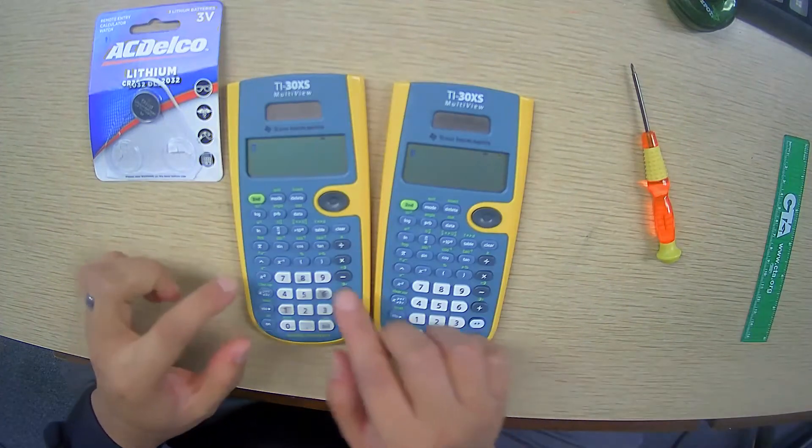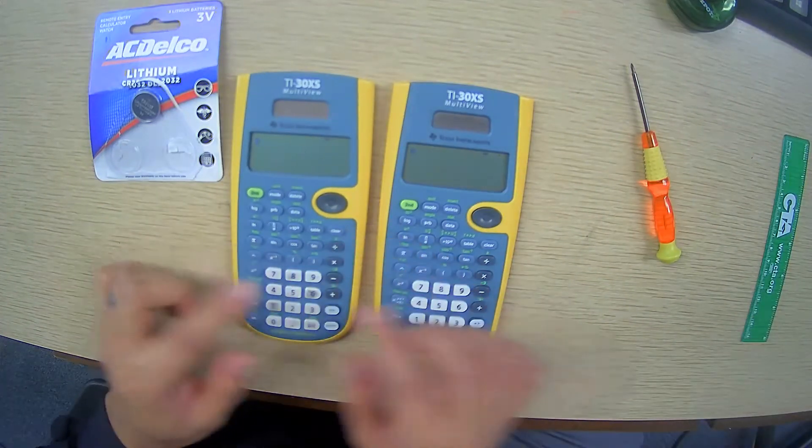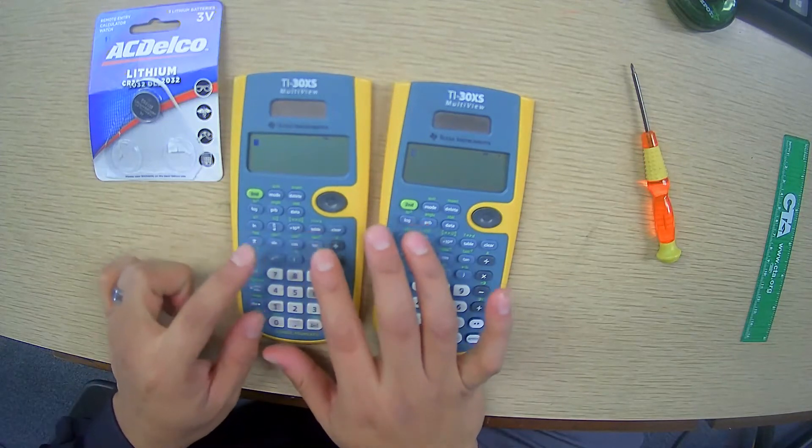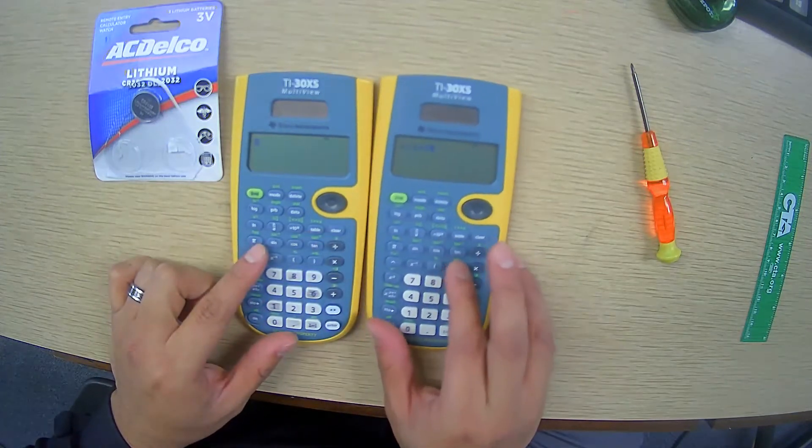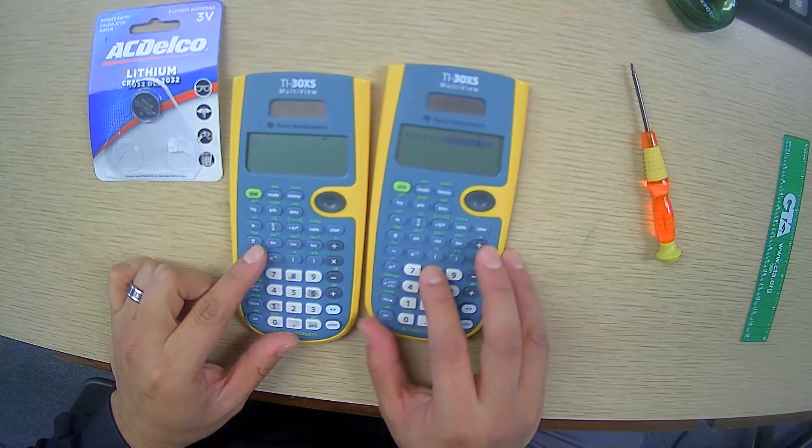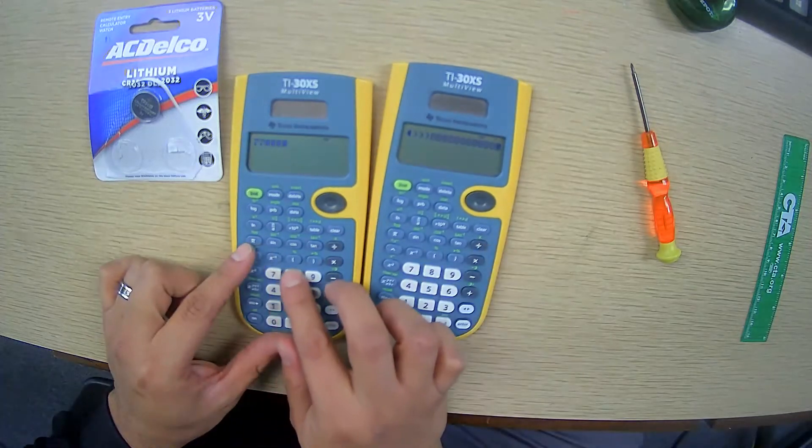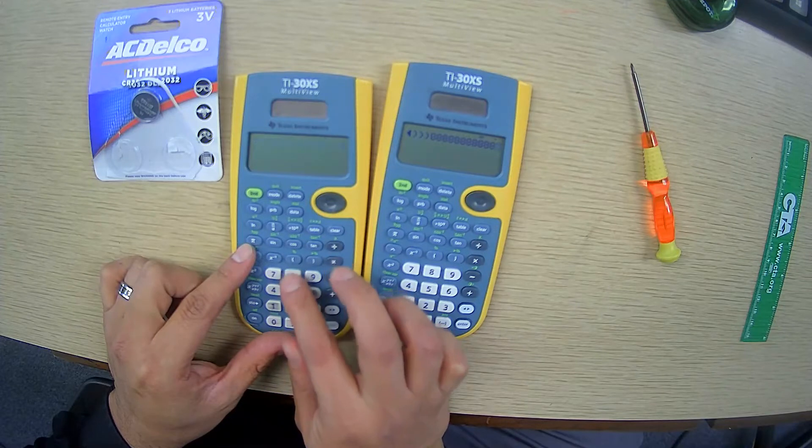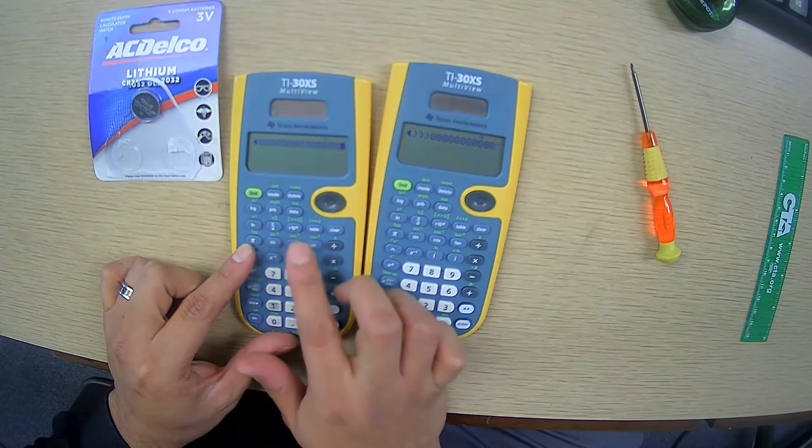All right, so we're going to continue. I mixed them up right now, so to know which one's battery is almost dead, I just press randomly a number here. This one is good. But if I do it to this one, you see how it's fading up? So this is the battery that needs to be replaced.